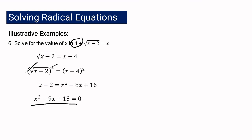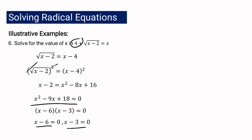The resulting equation is a quadratic equation. To solve it, you can use factoring, completing the square, extracting the square root, or the quadratic formula. Since this one is factorable, the factors are (x minus 6)(x minus 3) equals 0. Applying the zero product property gives x minus 6 equals 0 and x minus 3 equals 0, so the possible values of x are 6 and 3.